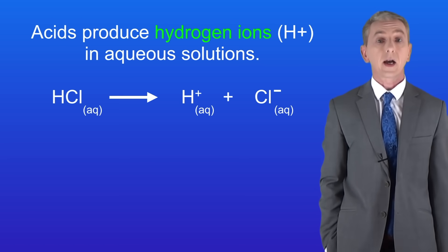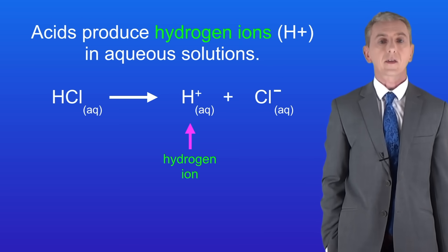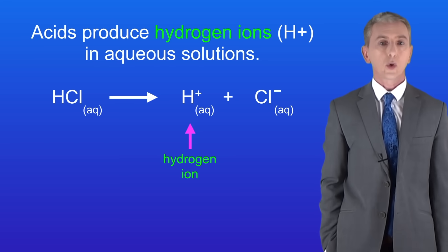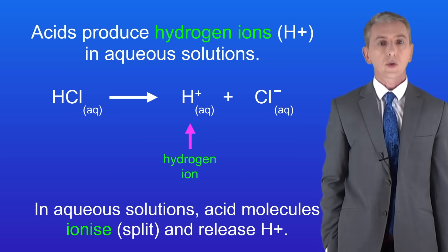As you can see, the hydrochloric acid molecule is splitting and it's releasing the hydrogen ion H+. Now scientists use a special word for when an acid molecule splits like this. We say that the acid molecule has ionized. So we can say that in aqueous solutions acid molecules ionize. In other words, they split and release the hydrogen ion H+.